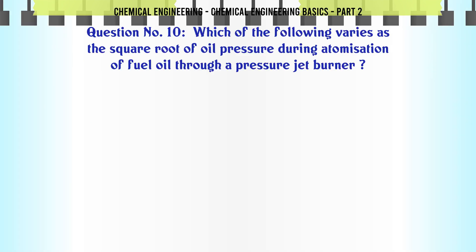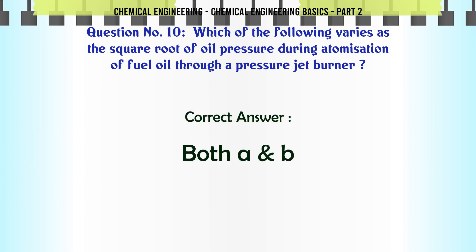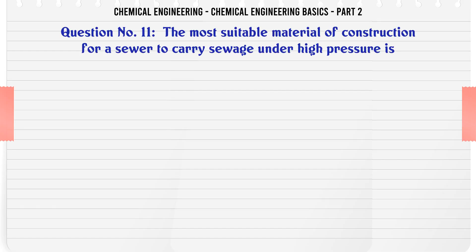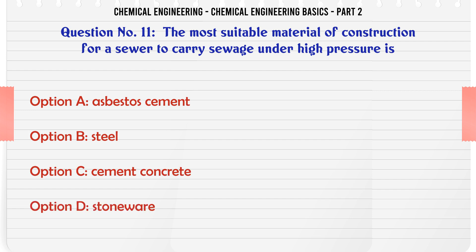Which of the following varies as the square root of oil pressure during atomization of fuel oil through a pressure jet burner? a) output fineness, b) velocity, c) both a and b, d) none of these. The correct answer is: both a and b.